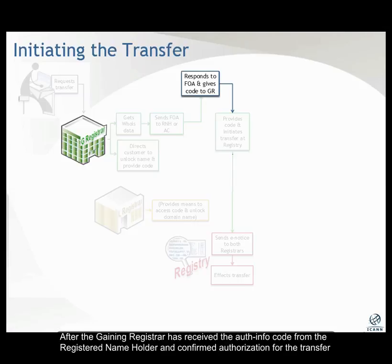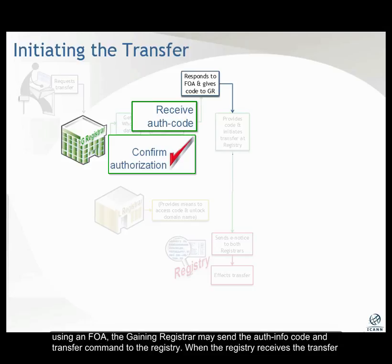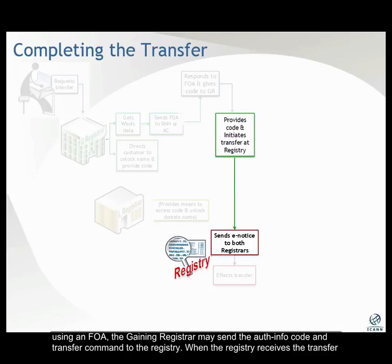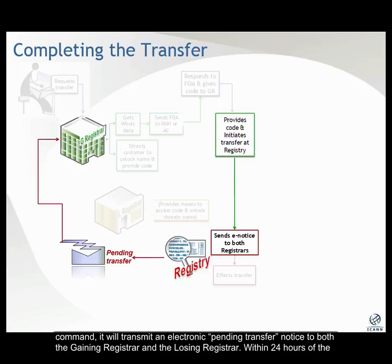After the Gaining Registrar has received the auth info code from the registered name holder and confirmed authorization for the transfer using an FOA, the Gaining Registrar may send the auth info code and transfer command to the registry. When the registry receives the transfer command, it will transmit an electronic pending transfer notice to both the Gaining Registrar and the Losing Registrar.